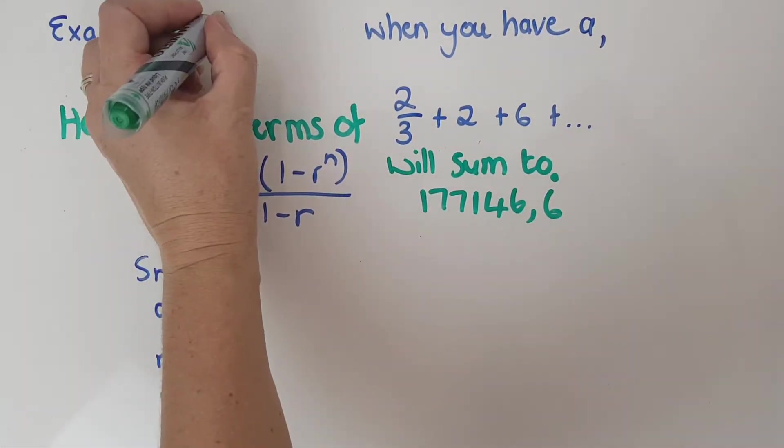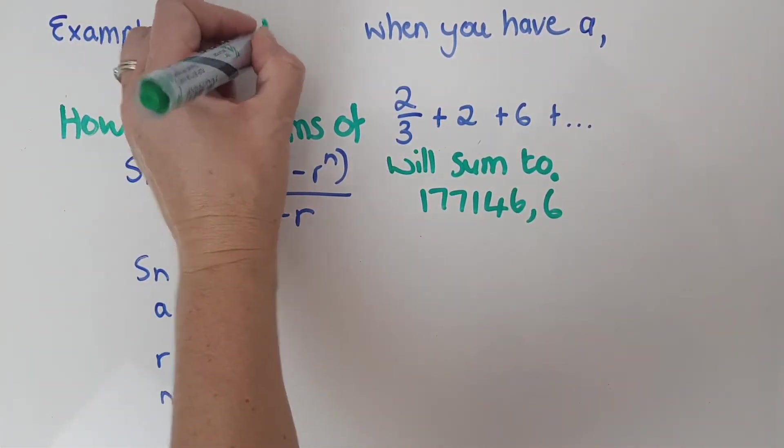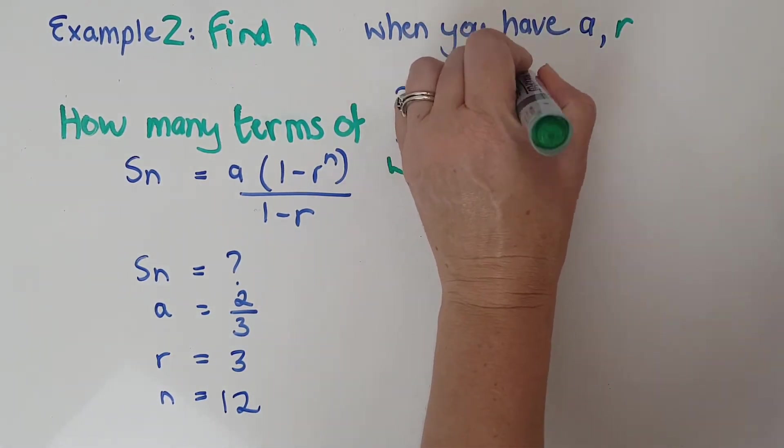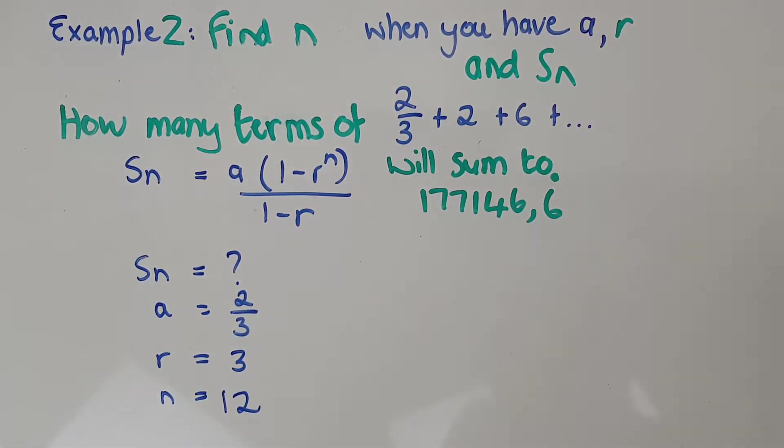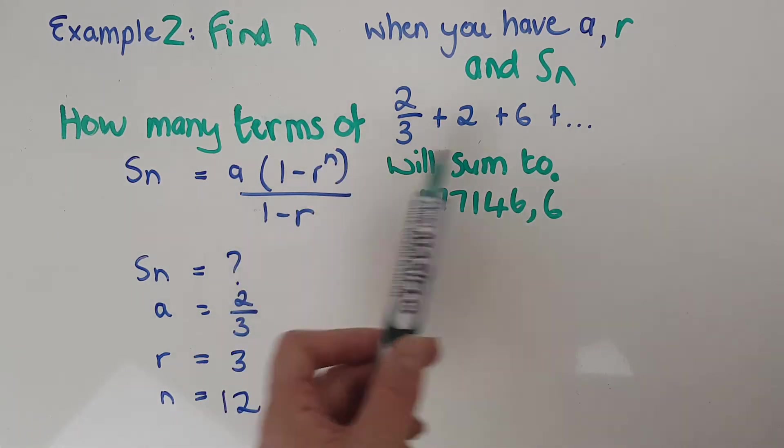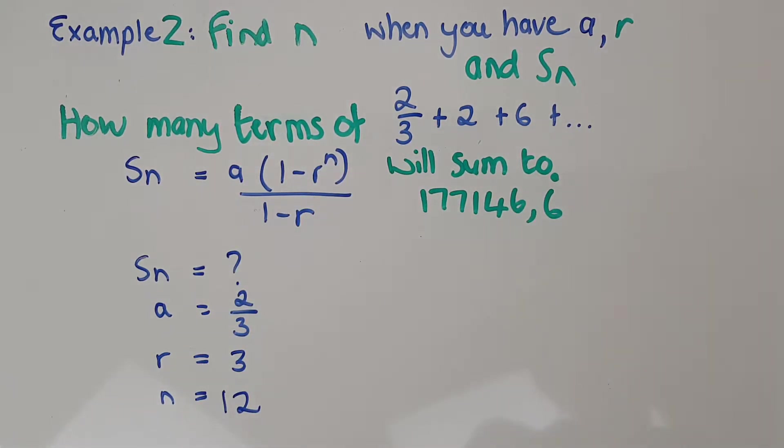Example 2, we're going to find n when you have a, r, and you're given the Sn. So it's the same example, I'm just shifting it backwards. So I'm saying how many terms of this series will sum to that amount. So I'm going to plug that in.